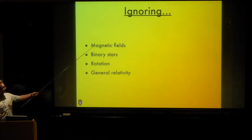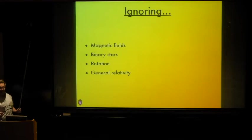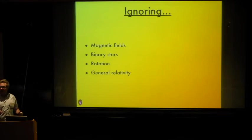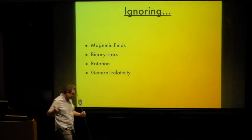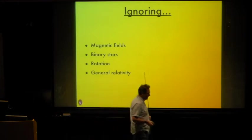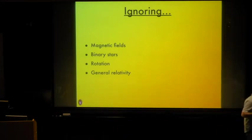What we're not going to discuss in this lecture and the one tomorrow are a few complicating factors: I'm not going to say anything about magnetic fields, I'm going to ignore the fact that the majority of stars are actually part of binary or higher-order systems, I'm going to pretend that stars don't rotate at all because that makes things tricky, and I'm not going to worry about general relativity — though even for the Sun, modeling the advance of Mercury's perihelion requires general relativity.